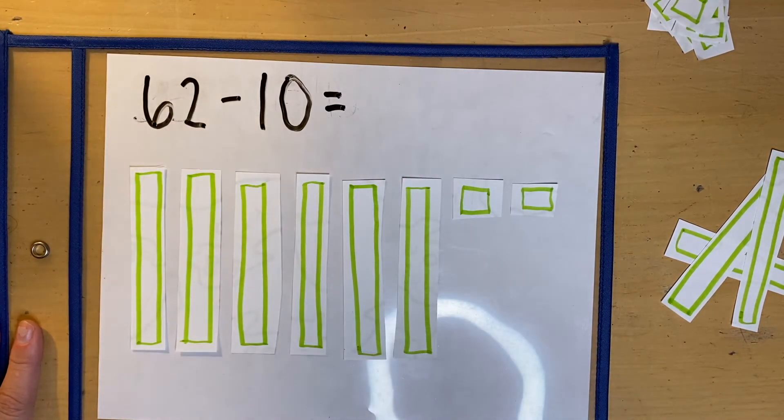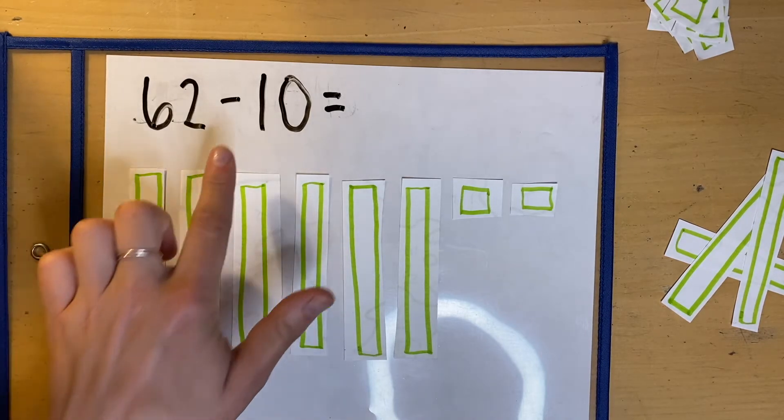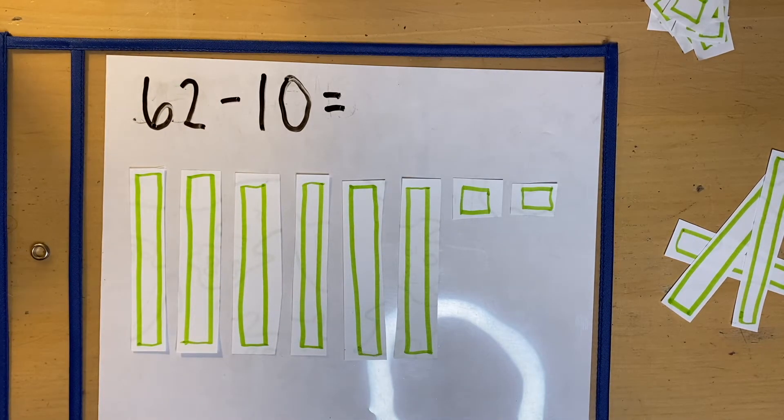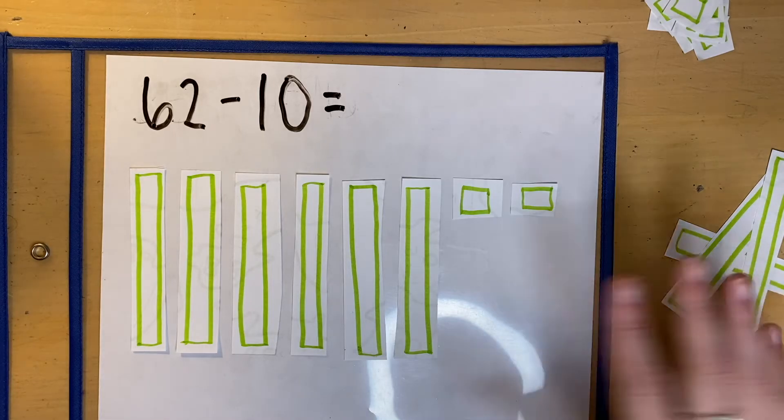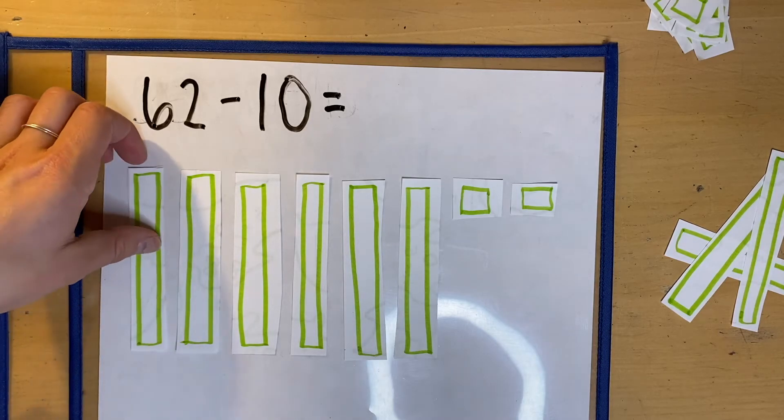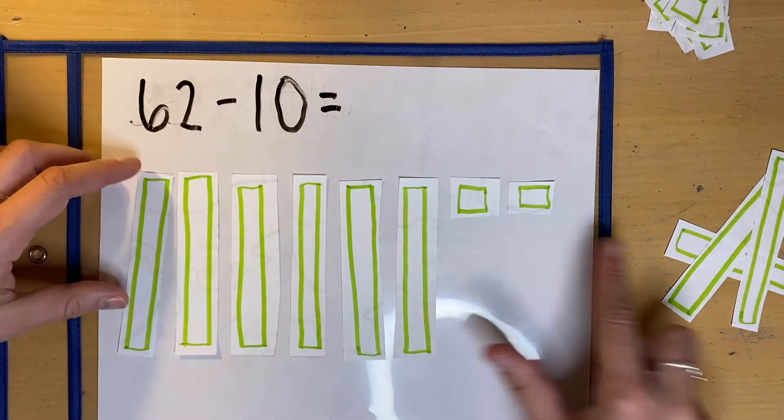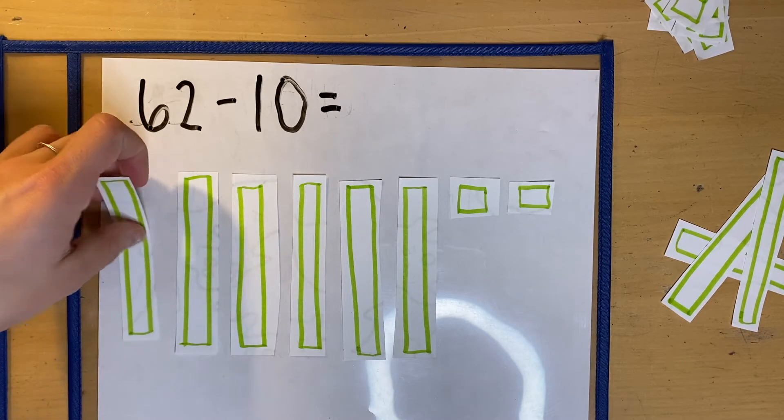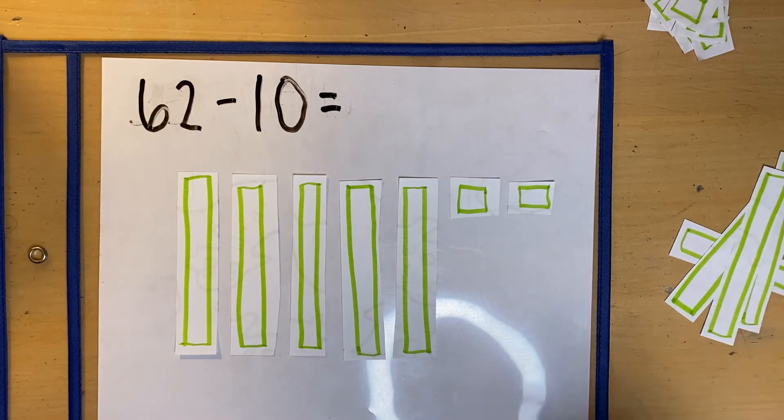And it says 62 minus 10. That minus sign, remember, is a subtraction sign. And when we're subtracting, we're getting smaller. We're taking some away. And so instead of adding another 10, like I did when we had our addition sign, I'm going to take a 10 away. So I'll take, here's my 62 and I'm going to take 10 away to see how many I have now.